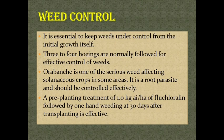Weed control. It is essential to keep weeds under control from the initial growth stage. 3 to 4 hoeings are normally followed for effective control of weeds. Orobanche is one of the serious weeds affecting solanaceous crops in some areas. It is a root parasite and should be controlled effectively. A pre-planting treatment of 1.0 kg per hectare of fluchloralin followed by one hand weeding at 30 days after transplanting is effective.